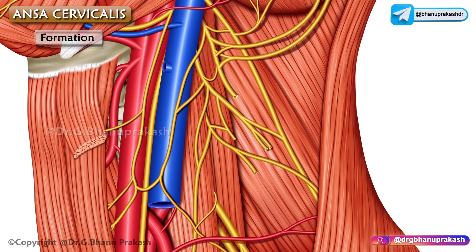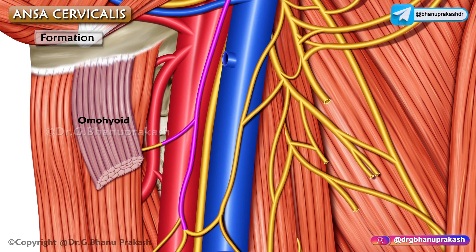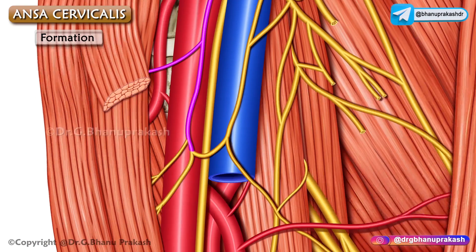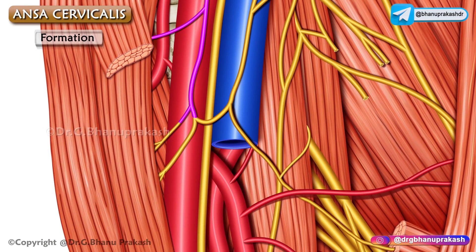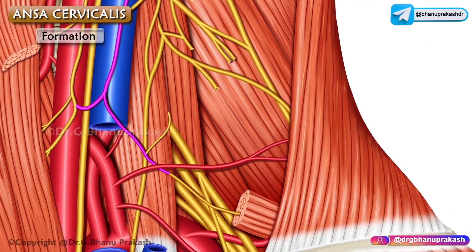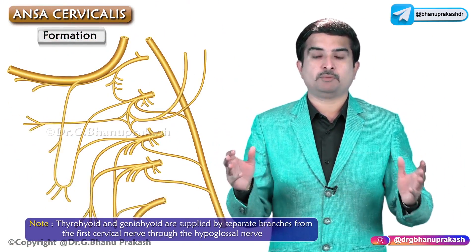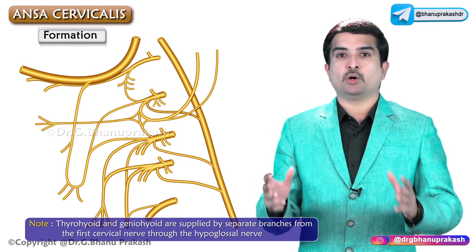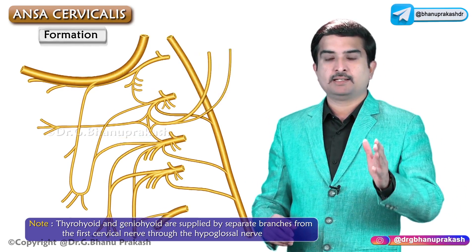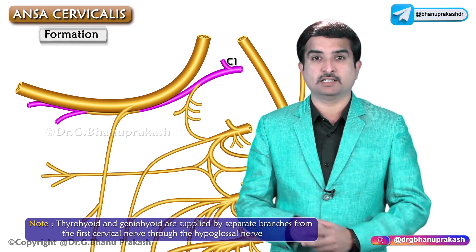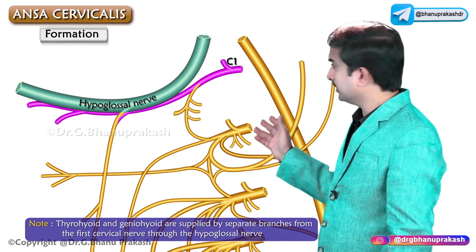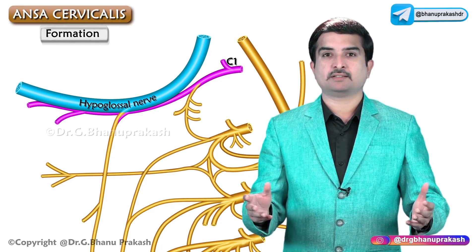Now let us discuss about the distribution. The superior root gives innervation to the superior belly of the omohyoid muscle. The loop, that is ansa cervicalis, gives innervation to important muscles like sternohyoid and sternothyroid. The inferior root of the ansa cervicalis gives innervation to the inferior belly of the omohyoid muscle. Note an important point that the thyrohyoid and geniohyoid are supplied by separate branches from the first cervical nerve by means of the hypoglossal nerve.